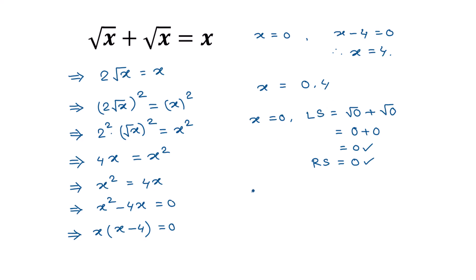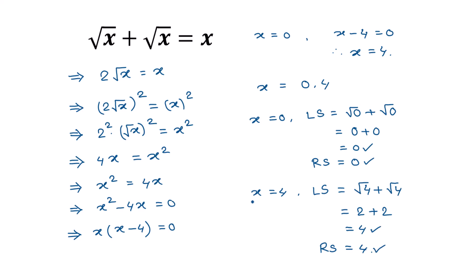When x is equal to 4, the left side is square root of 4 plus square root of 4, which is 2 plus 2 equals 4. The right side is x, which is 4. So left side equals right side, and x equals 4 is another solution. Therefore the solution of this equation is x equals 0 or 4.